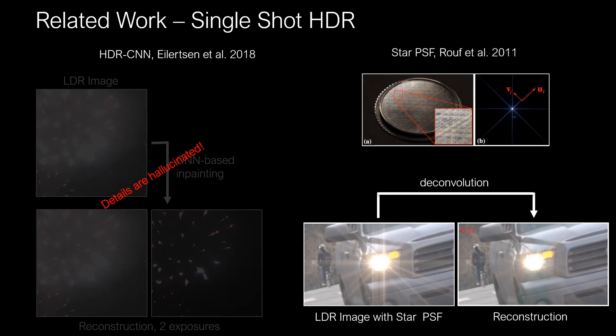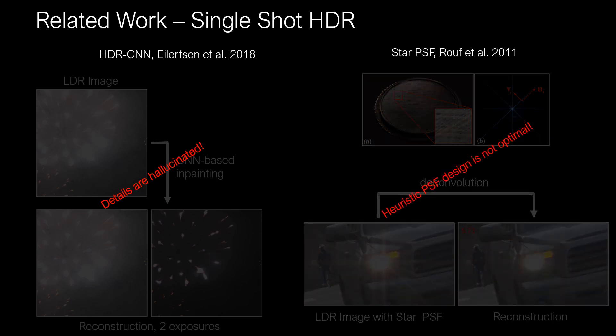A promising idea to optically encode bright scene details into a low-dynamic range image was proposed by Rufidol. They used a photographic filter that creates a star-shaped point spread function. This PSF spreads otherwise saturated details into other parts of an image, which are then recovered via deconvolution. Although interesting, this optical filter design was heuristically chosen and is not optimal.